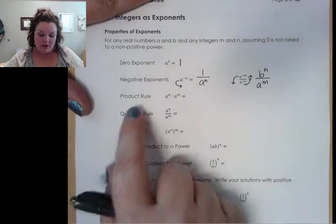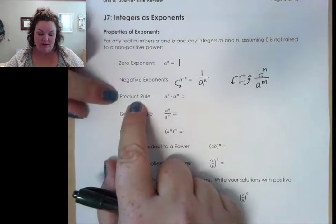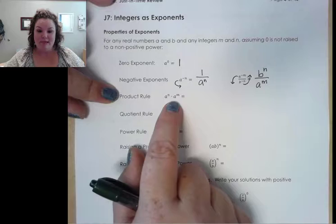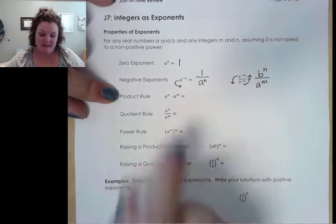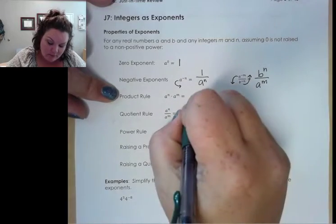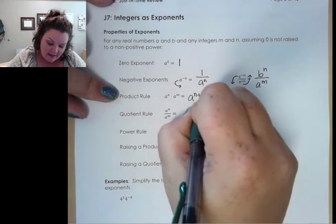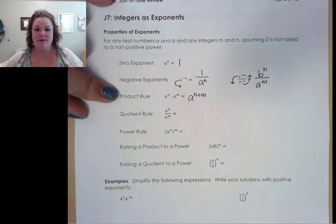Our next one that we use all the time is our product rule. Product rule says if you have the same base being multiplied together, we can simply add their exponents.